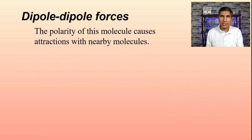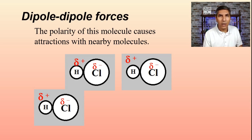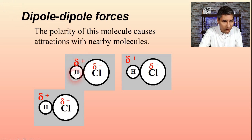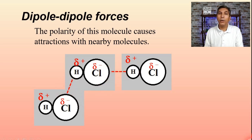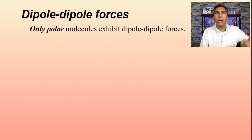There is a partial negative pole on the side with the chlorine and a partial positive pole on the side with the hydrogen. So if we have several HCl molecules next to each other, there's an attraction between the positive pole on one molecule and the negative pole of its neighbor — positives and negatives attract. That attraction is called a dipole-dipole force, and it's found only in polar molecules.